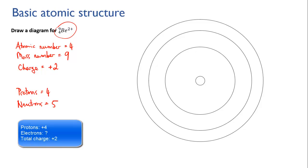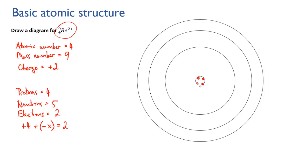So plus 4 plus something equals plus 2, and you work out that there must be 2 electrons — a charge of plus 4 from the protons minus 2 from the electrons gives an overall charge of plus 2. So we have 4 protons, 5 neutrons, and only 2 electrons, which fill up the first shell. That's our diagram for beryllium 2+ with a mass number of 9 and an atomic number of 4.